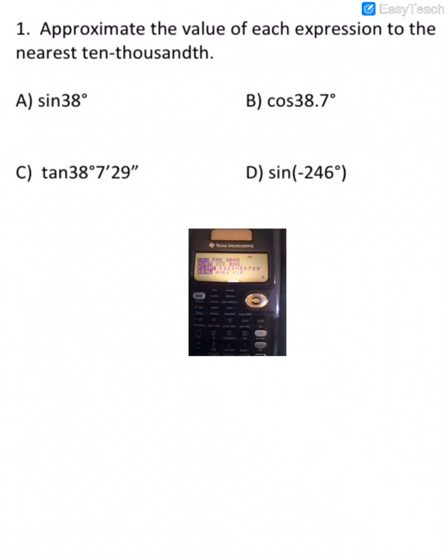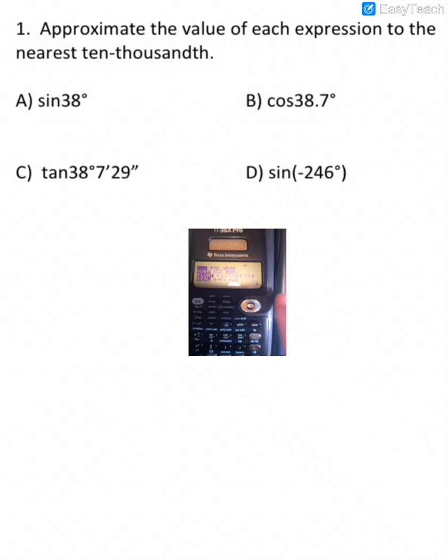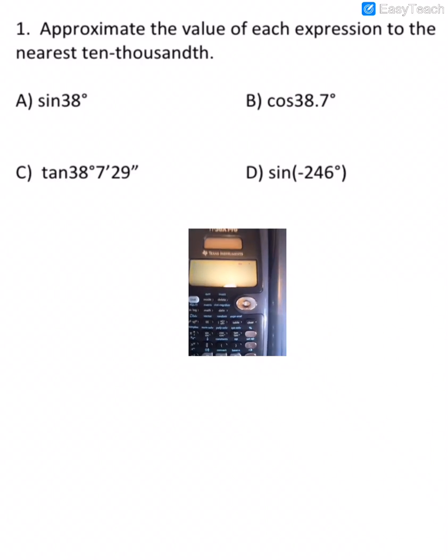And you see degree is highlighted. If it were on radians, then you would just scroll using the little silver scroll buttons. If we wanted it to be in radians, we would go there and hit enter. But we want it to be in degrees, so I can get out of that by pressing second and quit.